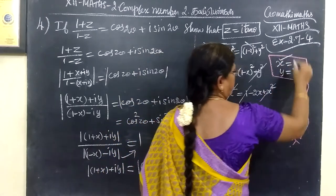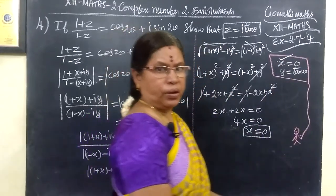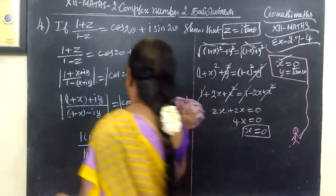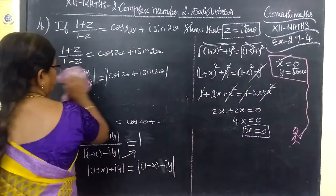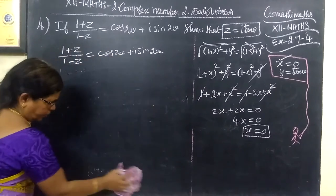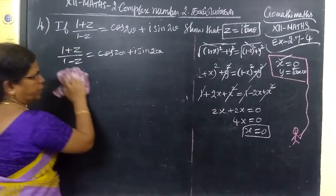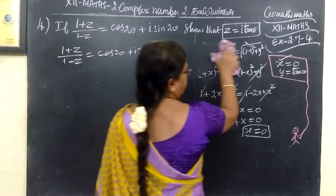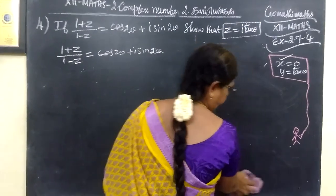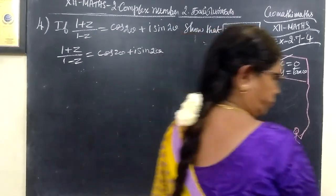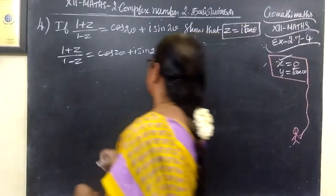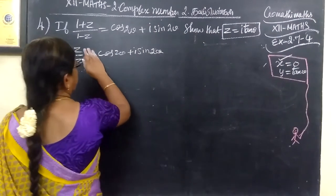We have proved x equals 0. Next, we need to prove y equals tan θ.